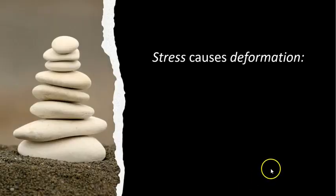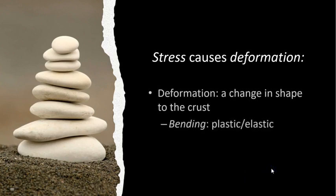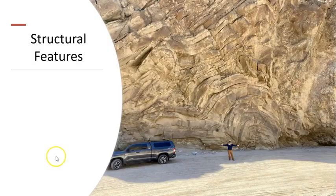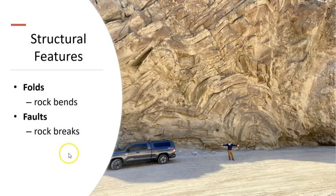Stresses cause deformation of the crust, which changes its shape through bending — called plastic or elastic deformation — and breaking, called brittle deformation. Bending and breaking change the structure of the rock of the crust. Deformation changes the shape of the crust into structural features, which include folds when a body of rock has been bent, or faults when rock has been broken and shifted along a fault.